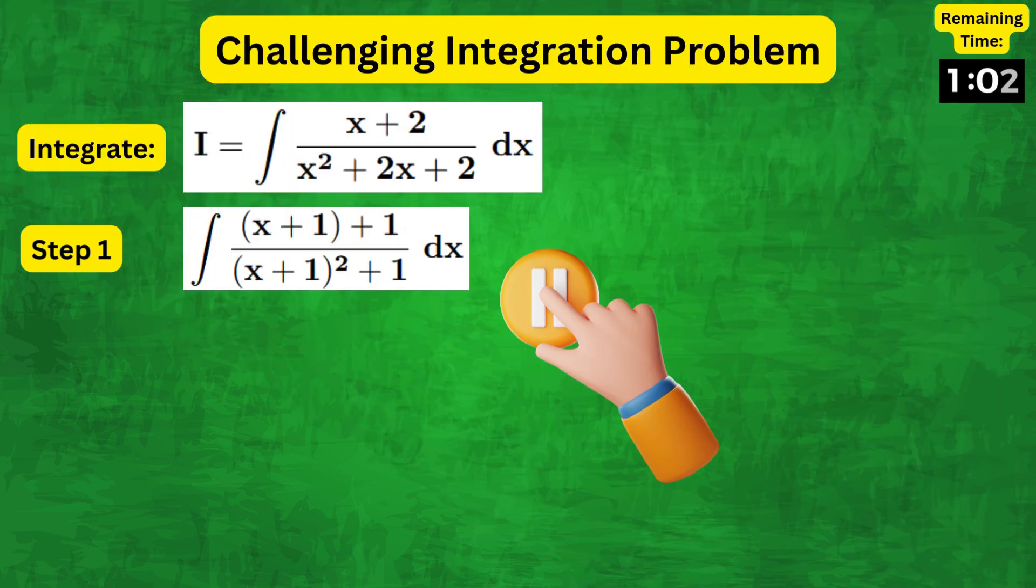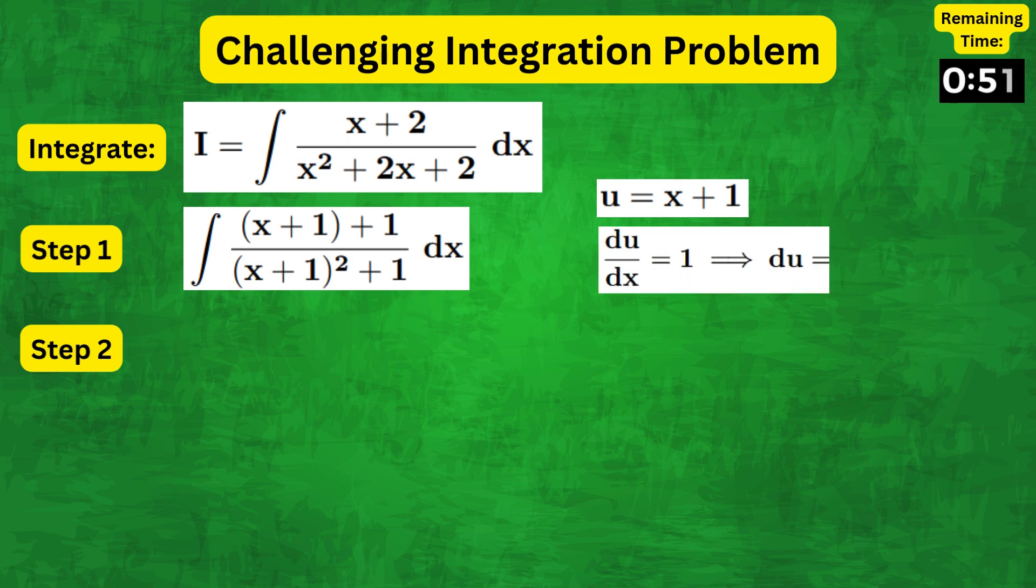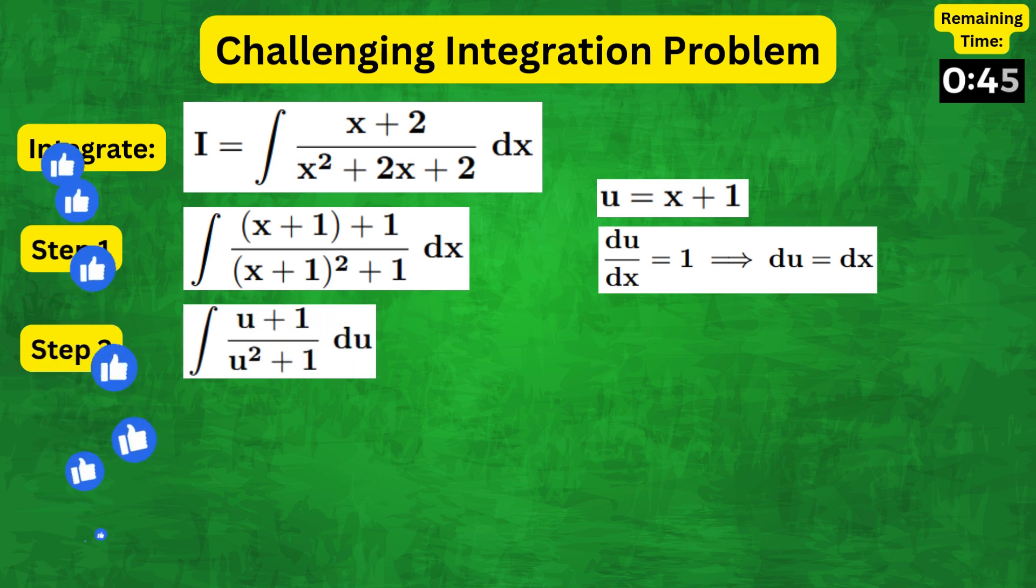Here I would suggest to pause the video to think about what the next steps might be. Okay, so we can use the substitution u equals x plus one so that du by dx equals one, therefore the integral becomes u plus one over u squared plus one du.